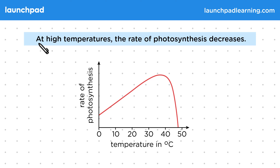For your exam, you don't need to know that photosynthesis is controlled by enzymes or that they become denatured, but knowing this might help you to understand the shape of the graph, as you do need to be able to interpret and explain graphs showing rate of photosynthesis and the limiting factor of temperature.